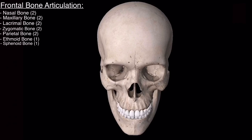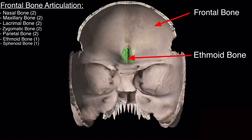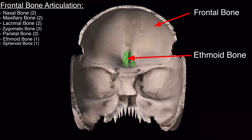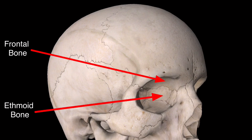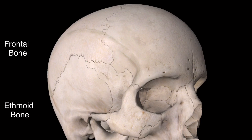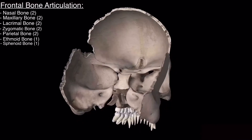The two remaining bones are the ethmoid and sphenoid. With the parietal and occipital bones removed, you can see the interior of the skull. The suture between the frontal bone and the ethmoid bone is called the frontoethmoidal suture, which is also clearly visible in the orbit. The suture between the frontal bone and the sphenoid bone is called the sphenofrontal suture.